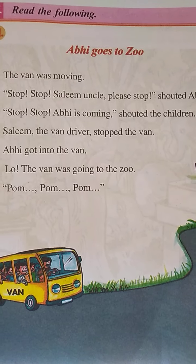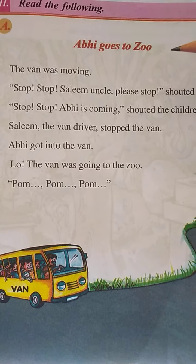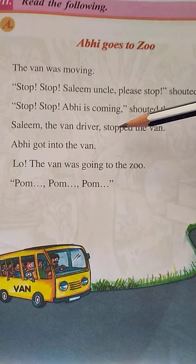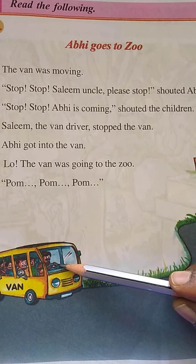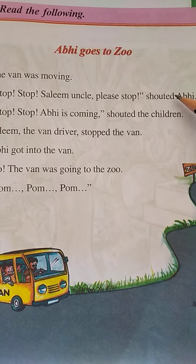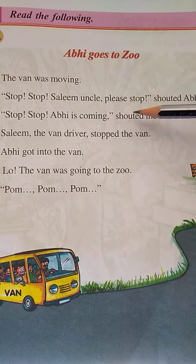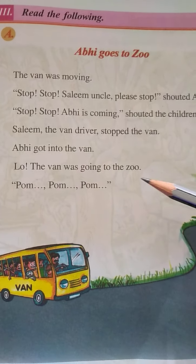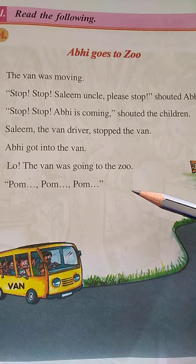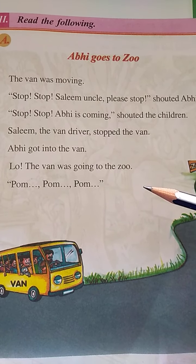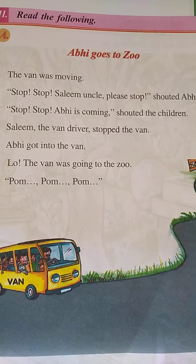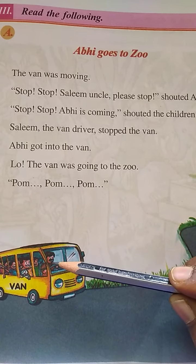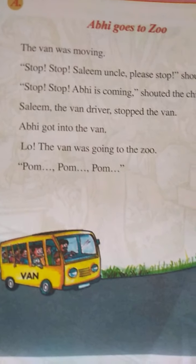The van was moving and Abhi is saying 'Stop! Stop! Salim uncle, please stop!' shouted Abhi when the van was moving. He came onto the road, saw the van moving, and kept shouting 'Stop! Stop!' Salim uncle is the driver who is driving the van. Then all the children sitting in the van saw Abhi and they also shouted: 'Stop! Stop! Abhi is coming!'